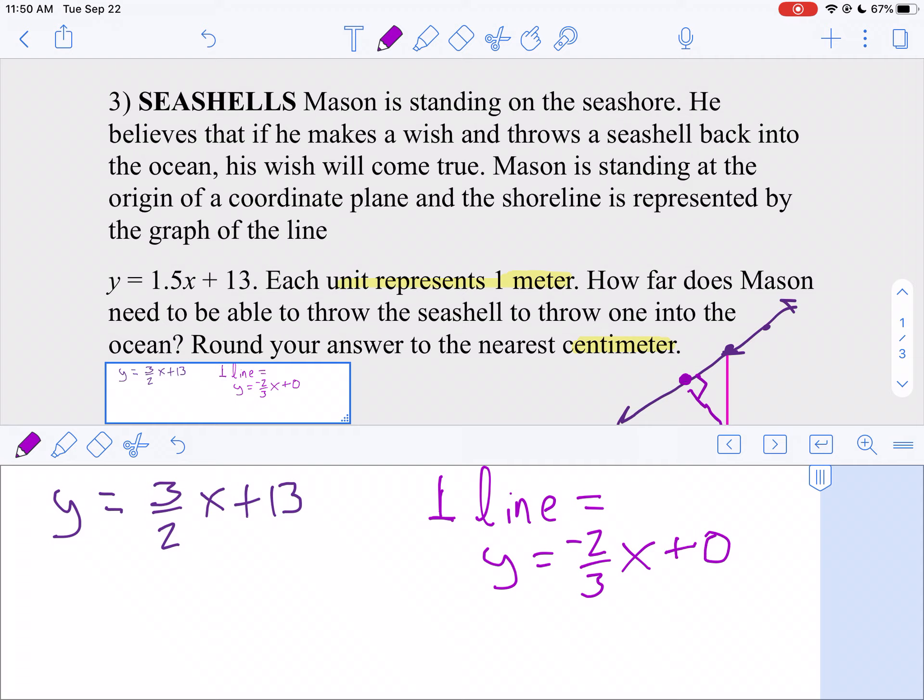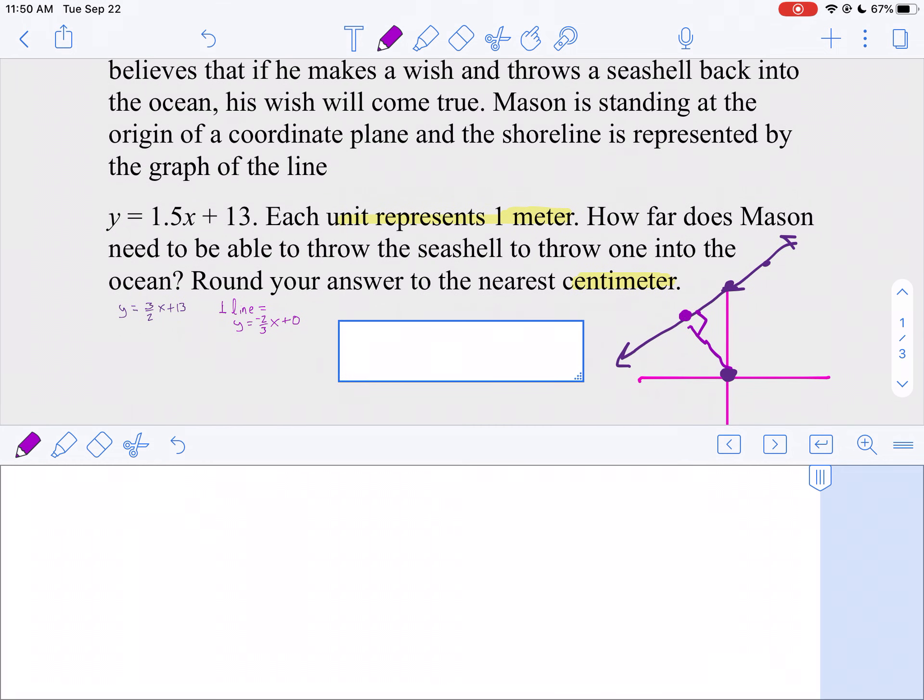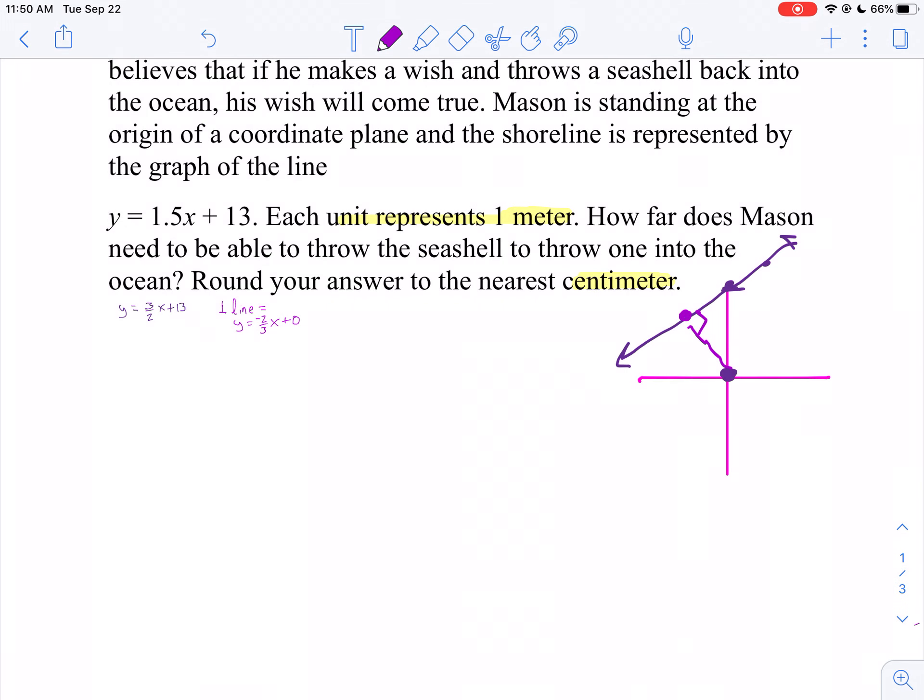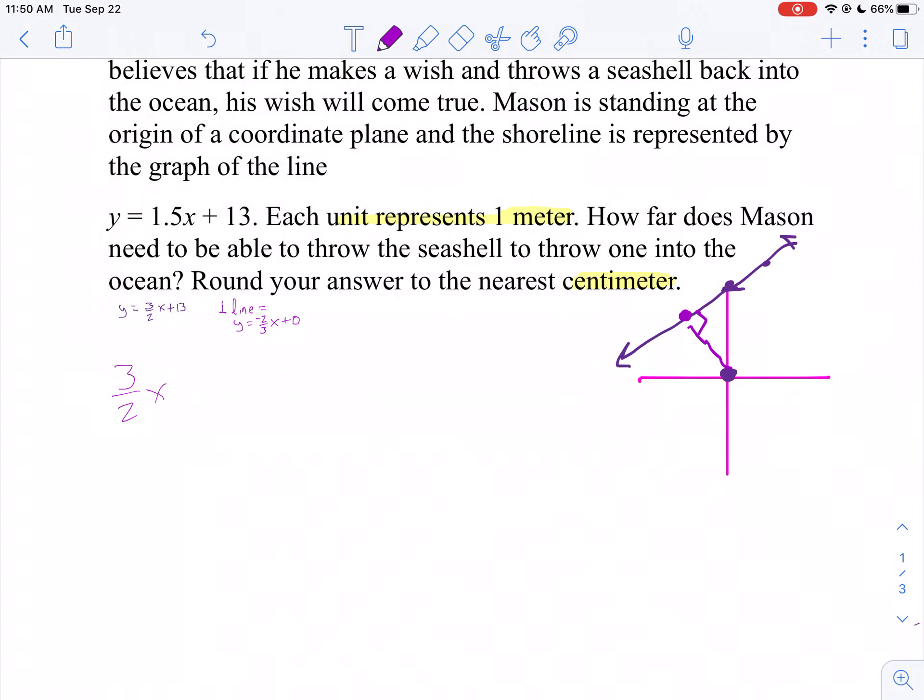Now I want to find out where these two lines intersect. So that's going to be my point. What we're going to do is set these two lines equal to each other. So we're going to say 3 over 2x plus 13 equals negative 2 thirds x.